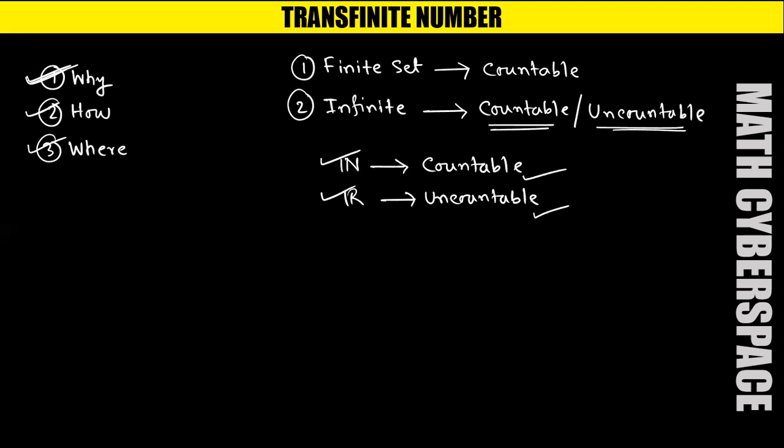The question is how we can differentiate these two sets, or how we can identify two infinite sets differently. And here is the point where we need transfinite numbers. We need two different notations so that we can refer to infinite sets distinctly.